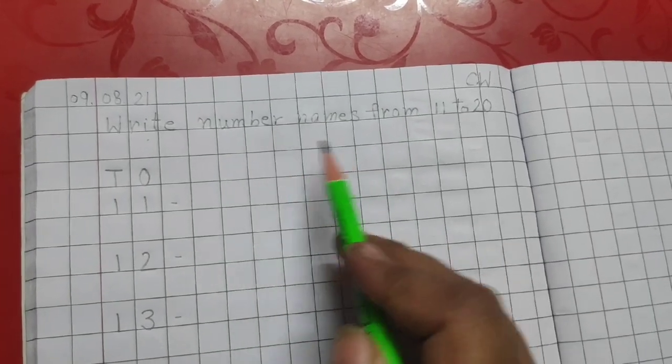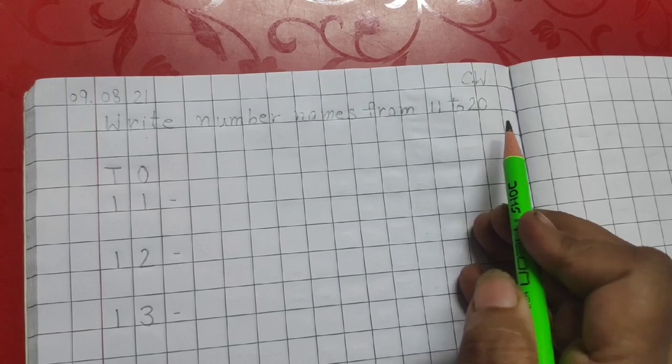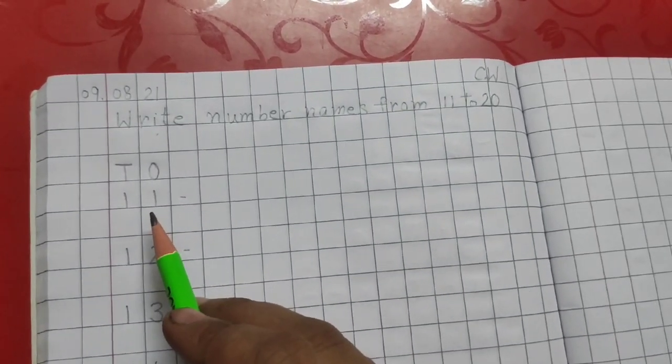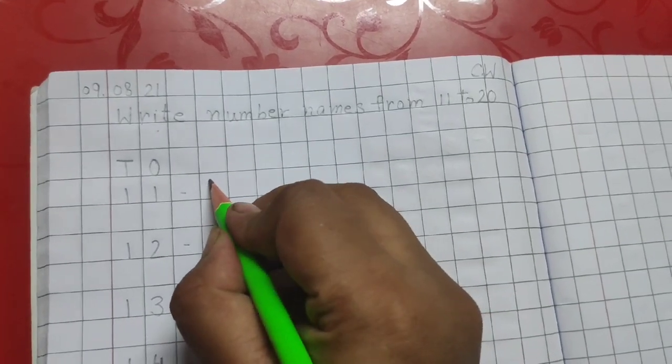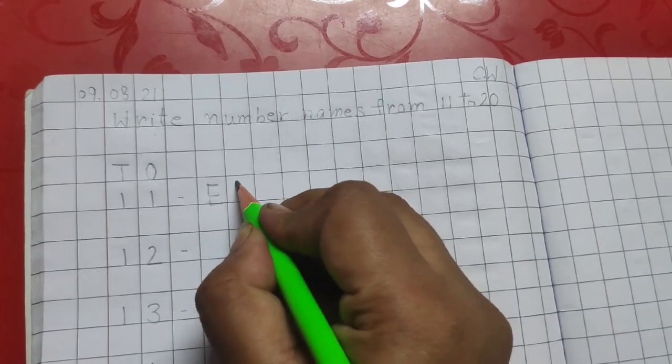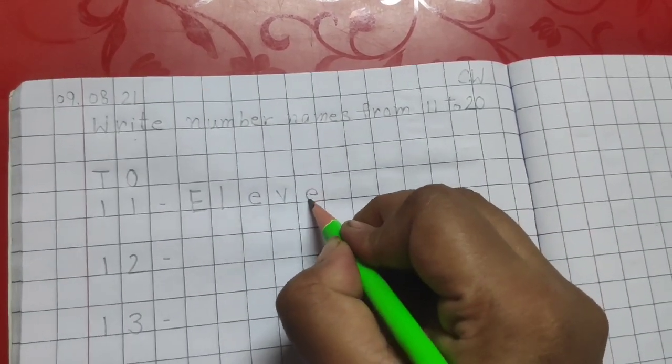Today we will write number names from the numbers 11 to 20. The first number written over here is 11. The number name for 11 is E-L-E-V-E-N.